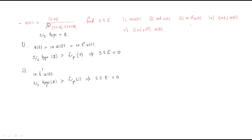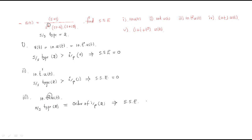The third input 10·t²·u(t) is the important case. The system type is 2, which equals the order of input (2). We have a finite steady-state error with formula ess = a / Ka. This signal is a parabola. The standard parabola form is a·t²/2·u(t).